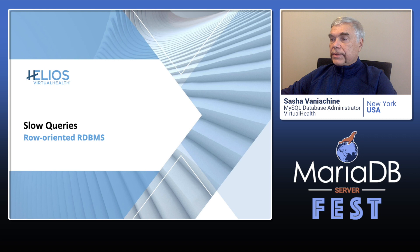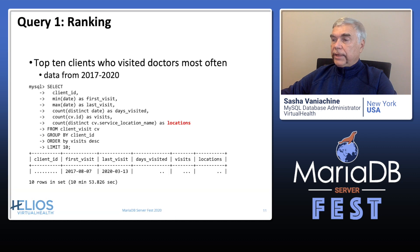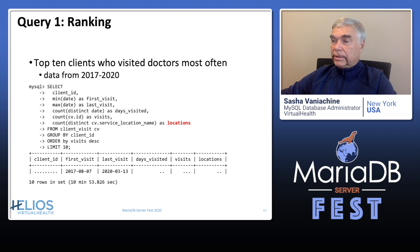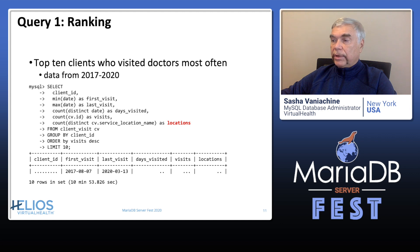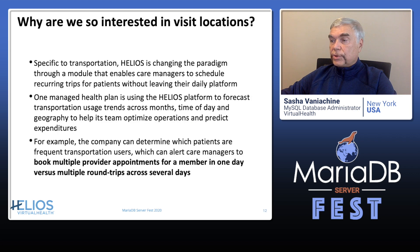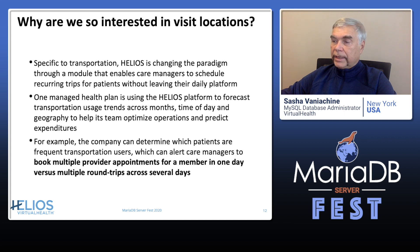Why are some queries slow in transactional databases? Let us find the top 10 clients who visited doctors most often. Such ranking queries are known to be hard for relational database technologies, so it is not surprising that this query is so slow. Please take a look at the Locations column highlighted on this slide. This is one example of how our software reduces healthcare costs by enabling booking multiple doctor's appointments in one location.